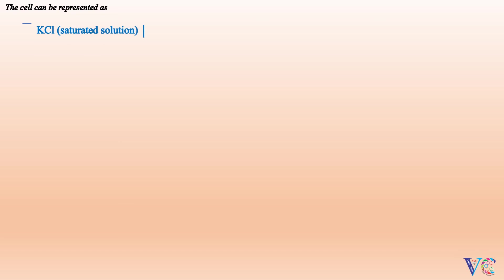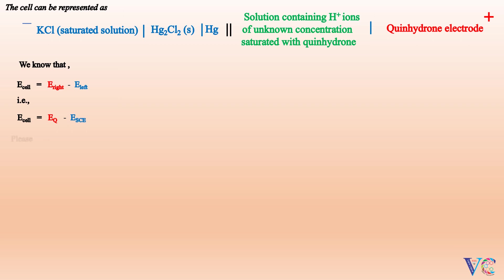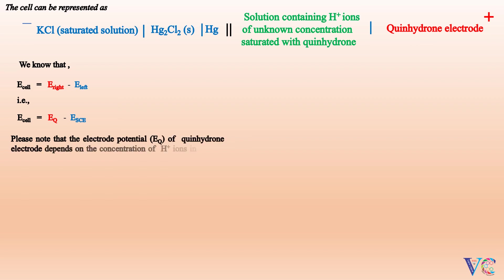The cell can be represented as shown. E_cell = E_right − E_left, that is, EMF of the cell = electrode potential of the quinhydrone electrode − electrode potential of the saturated calomel electrode. Note that the electrode potential E_Q of the quinhydrone electrode depends on the concentration of H⁺ ions in the test solution.